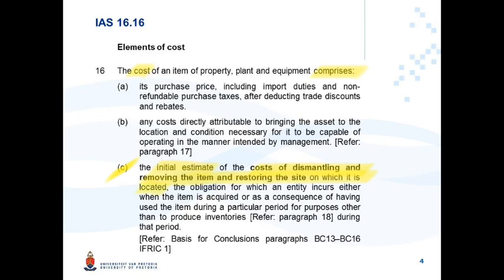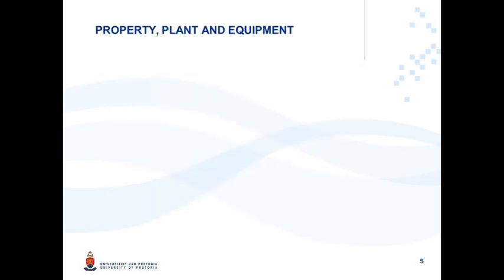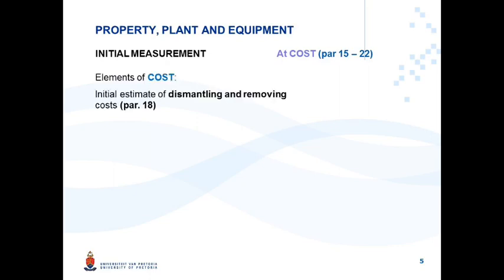On which it is located. Let's break that down. We are busy with initial measurement. All items of PPE are initially measured at cost. An element of this cost is the initial estimate of dismantling, removing, and restoration costs. Let's look at an example of this.